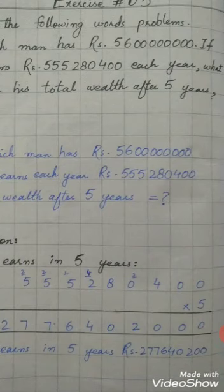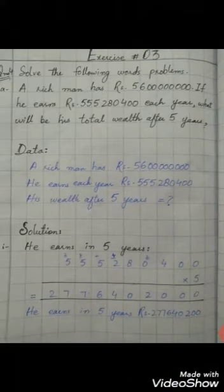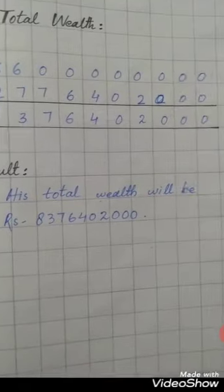So in 5 years he has earned rupees 2,776,402,000. Our next step is to find his total wealth by adding this to his initial amount.